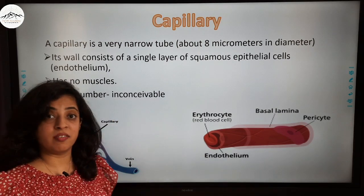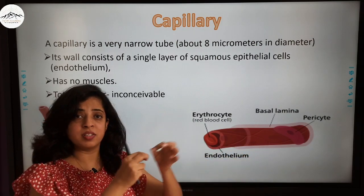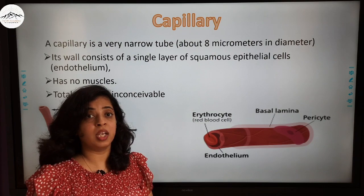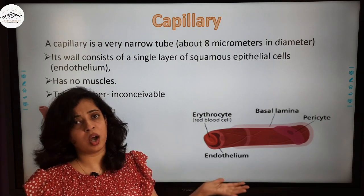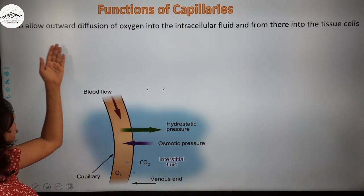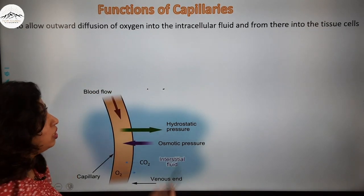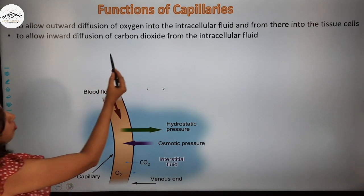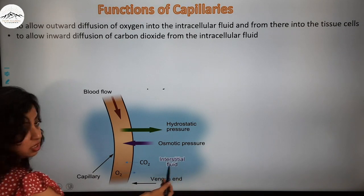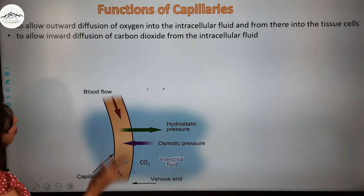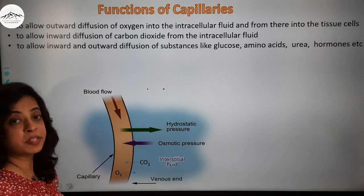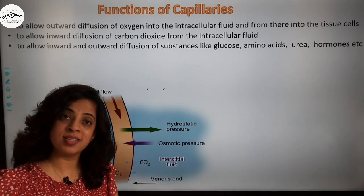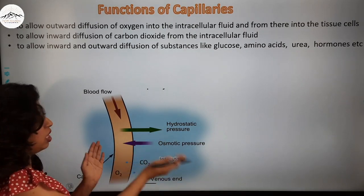The total number of capillaries is inconceivable. If you take the capillaries of one single person and put them end to end in a row, they may extend up to about 1 lakh kilometers, and their wall surface area can equal around 500 square meters. The functions of capillaries include: allowing outward diffusion of oxygen into the intercellular fluid and from there into tissue cells; allowing inward diffusion of carbon dioxide from the intercellular fluid; and allowing inward and outward diffusion of substances like glucose, amino acids, urea, and hormones.